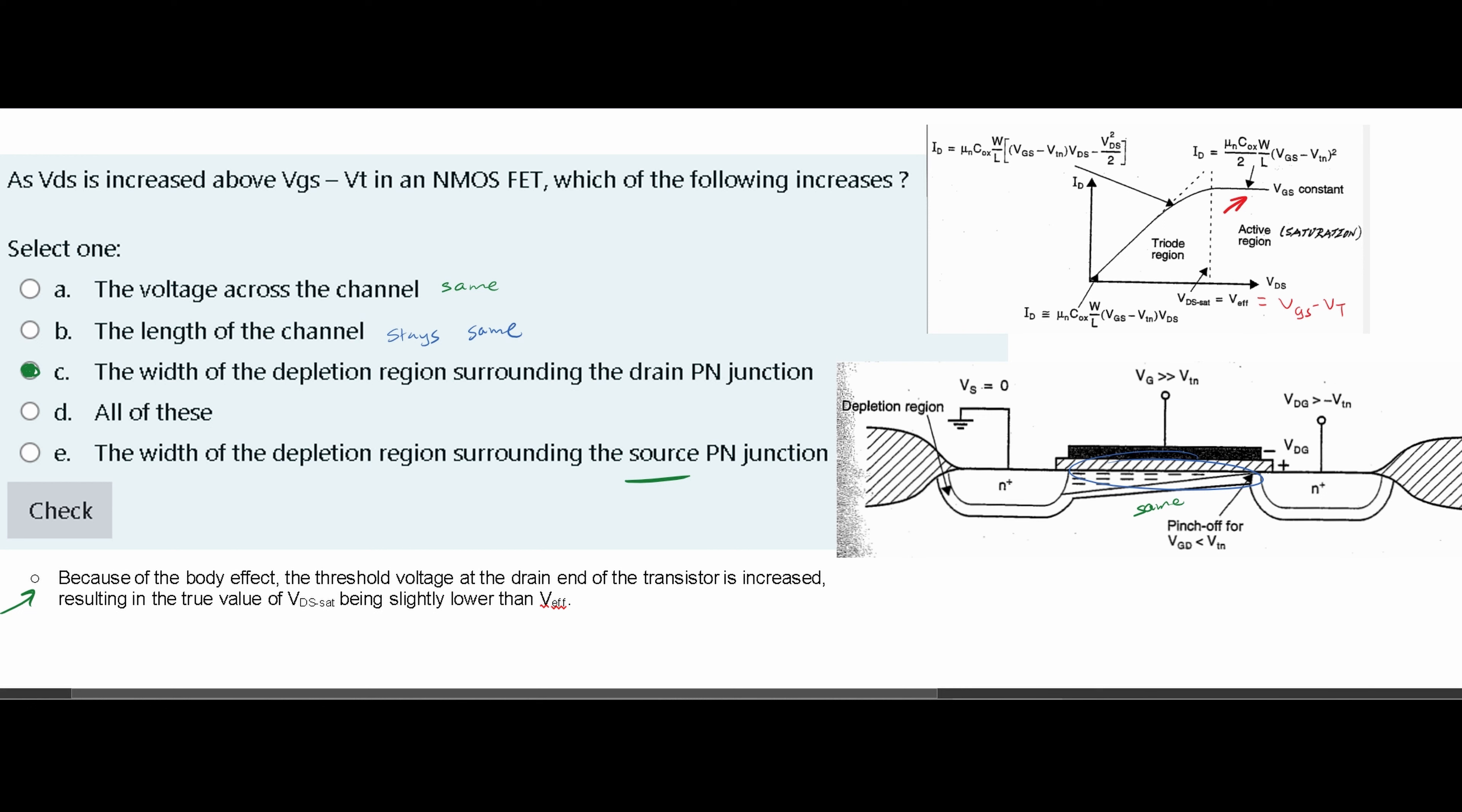It's obviously not all of these. And the width of the depletion region surrounding the source PN junction is not going to be true, since at the source is at its lowest, it's not going to be increased right there.